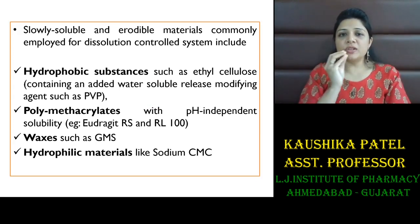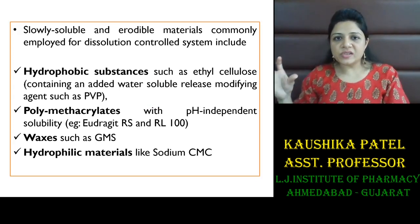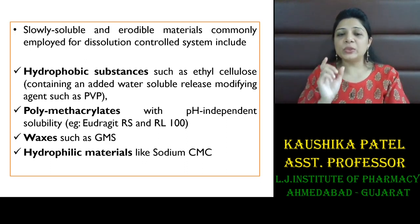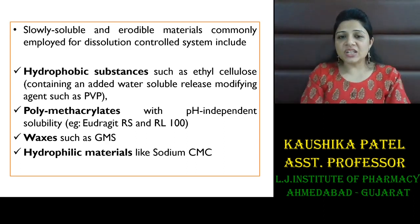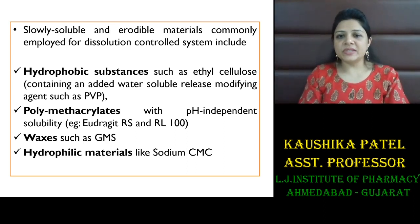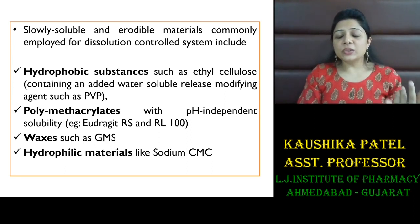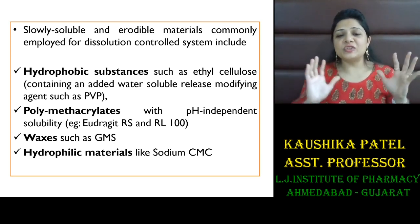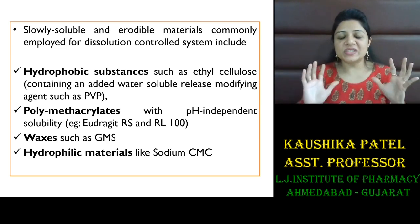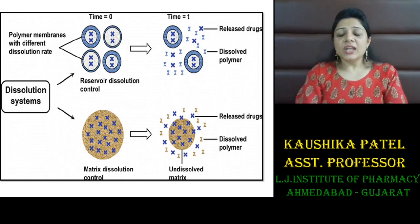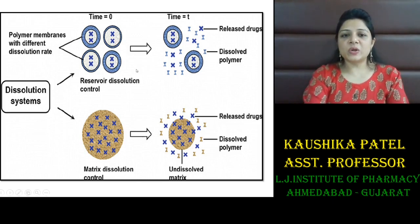Whenever you are going for a polymer dissolution control system, you have to select a polymer that is slowly soluble and erodible. Examples of such polymers include hydrophobic polymers like ethylcellulose and polymethacrylates, waxes like glycerol monostearate, or hydrophilic polymers like cellulose derivatives and natural gums. You can see how these dissolution systems work.